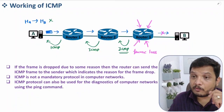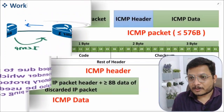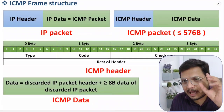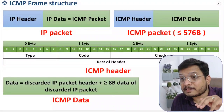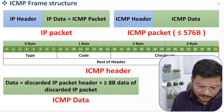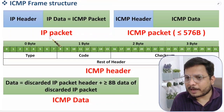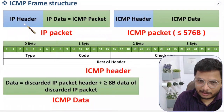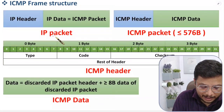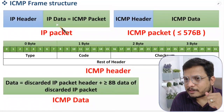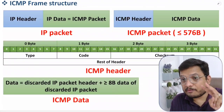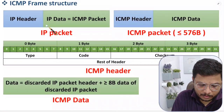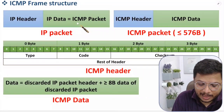Now let's look at the frame structure of ICMP. ICMP is implemented on IP. An IP packet — for example an IPv4 packet — has an IP header and IP data. The ICMP packet resides in the IP data field. IP can be either IPv4 or IPv6, so this applies generally. Inside the IP data we have the ICMP packet.